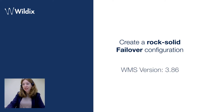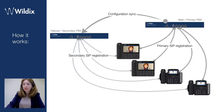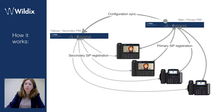Today we will see how to create a rock-solid failover configuration with Wildix starting from WMS version 3.86. We have two PBXs — one is main or primary and another one is failover or secondary. They can be hardware PBXs, or one can be in cloud and another one can be hardware.